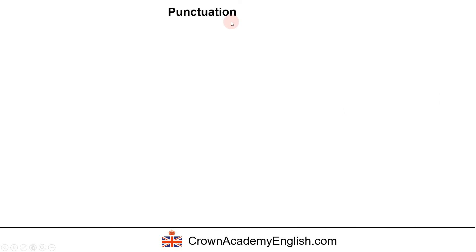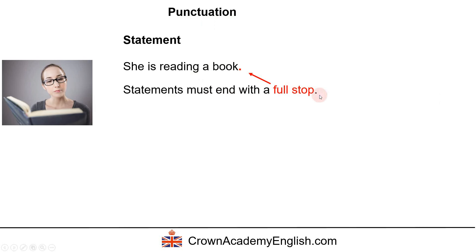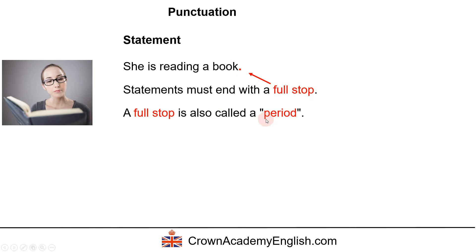Let's look at the punctuation. When we are writing statements and questions, we don't do it in the same way. For a statement — 'She's reading a book' — statements must end with a full stop. A full stop is a dot that we write at the bottom of the last letter of the sentence. A full stop is also called a period.